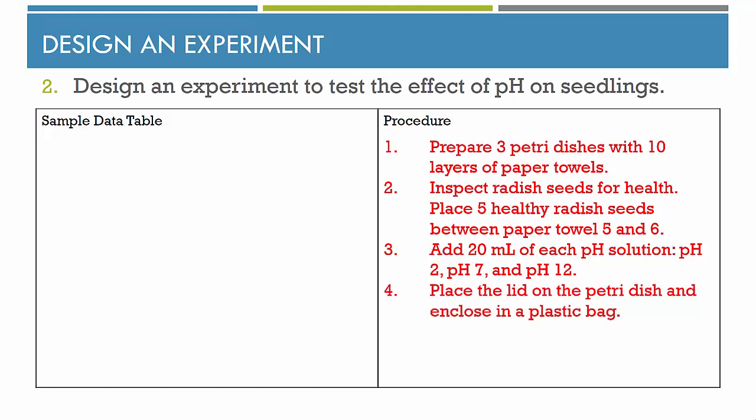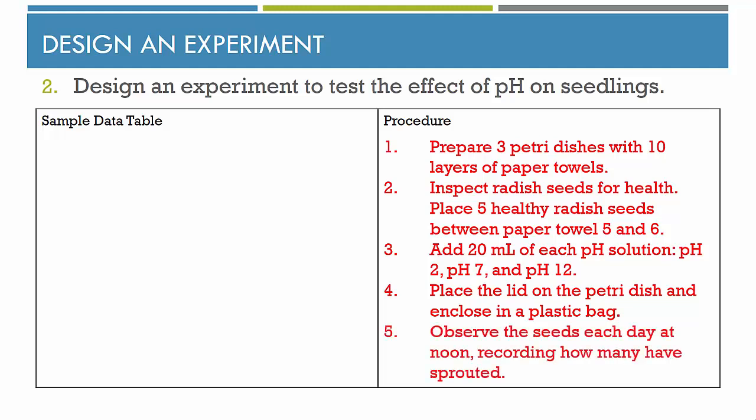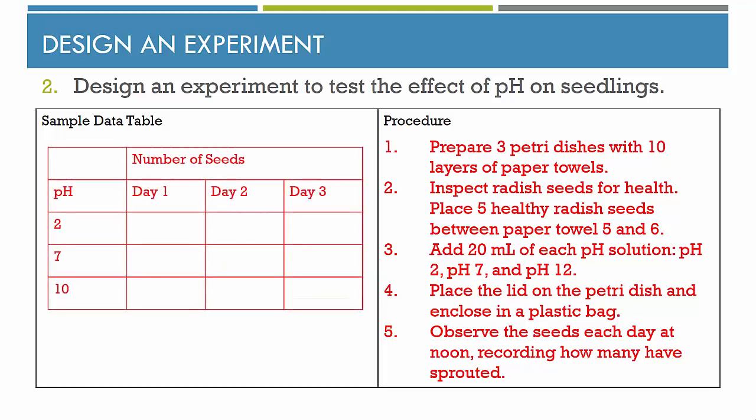Place a lid on the petri dish and put it inside a plastic bag so the water doesn't evaporate. Then observe the seeds each day at the same time — at noon — to record how many have sprouted. The sample data table needs to have the independent variable and the dependent variable. The independent variable is pH, so I have 2, 7, and 10. The dependent variable is the number of seeds that have germinated for each day.